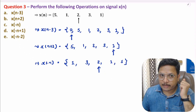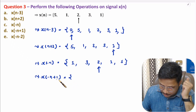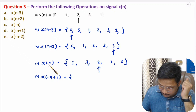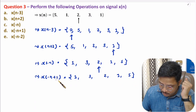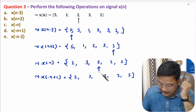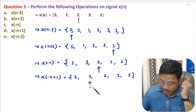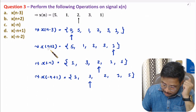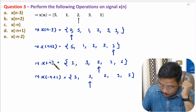Now I will explain x(-n+1). We take the folded sequence 1, 3, 2, 1, 5 and with plus one, we shift the reference in the positive direction by one element — so the reference moves to the next location. Note that after folding, the shift direction is opposite to the non-folded case: for plain n+2 you shift in one direction, but after folding you shift in the opposite direction.